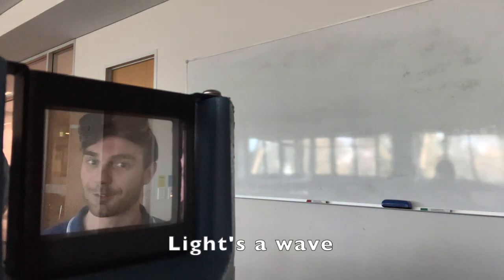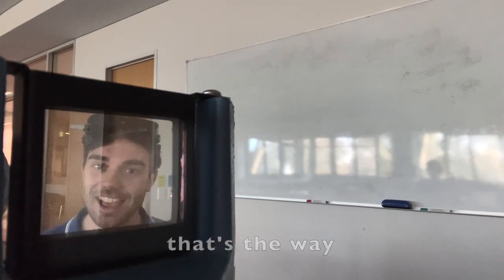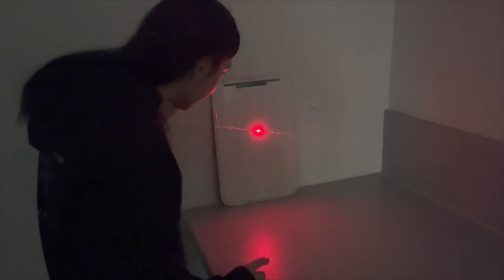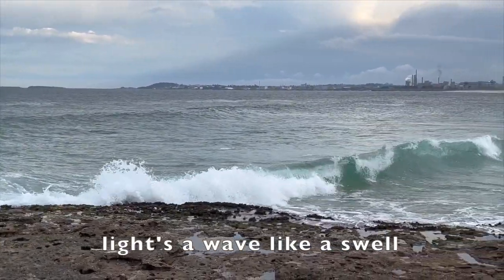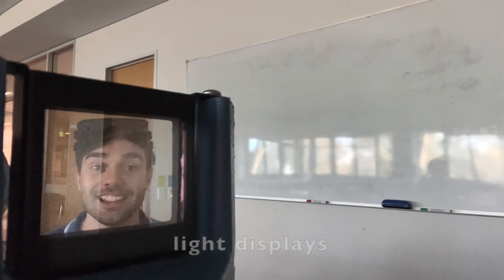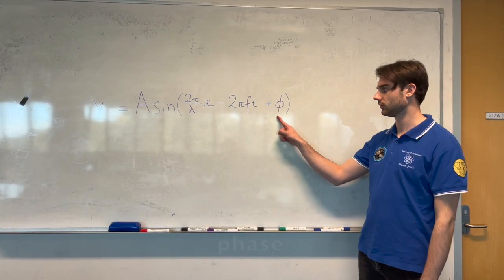Light's a wave but it behaves like a particle too. That's the way it can do all the things it can do. Light's a wave like a swell on stormy seas. Light displays wave properties like phase, amplitude, wavelength and frequency.